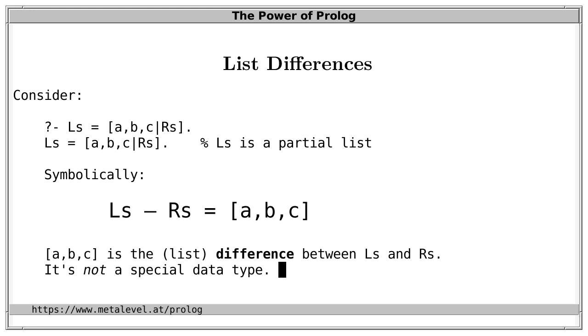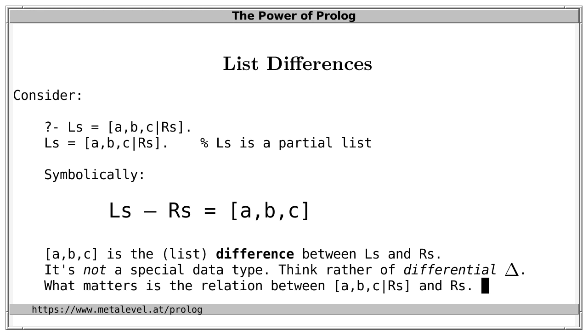In particular, that's not a special data type. It's not a special kind of list. I stress this because in the literature you will also encounter the term difference list. However, that would suggest it's a special kind of list, which it isn't. Rather, it's the difference between two Prolog lists in analogy to a differential in analysis.